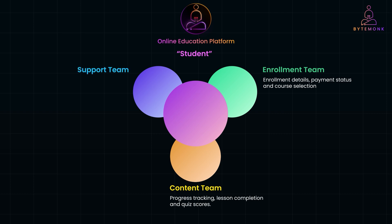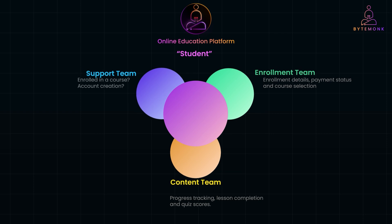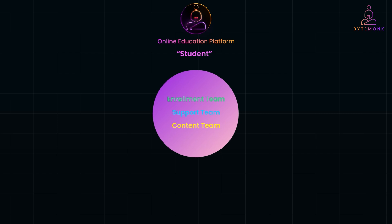And for the support team, a student might include anyone who reaches out for help, whether they have enrolled in a course or just created an account. Imagine if these teams tried to use the same system and a single definition of 'student' — problems quickly arise. The content team doesn't need to know about payment statuses, but that's critical for the enrollment team. And the support team needs information on both active and inactive users, but that's irrelevant to the content team.